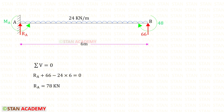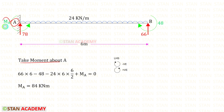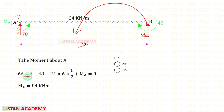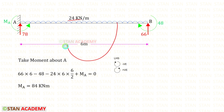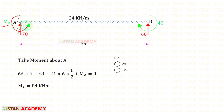Using sigma V equals zero we can find Ra. Taking moments about A to find Ma: RB1 acts anti-clockwise so it is positive, giving 66 times 6. The moment 48 acts clockwise so it is negative. The UDL acts clockwise so it is also negative, and with the UDL we multiply the distance and then the distance by 2. Assuming Ma acts anti-clockwise it is positive, and we get a positive value for Ma, confirming our assumption is correct.